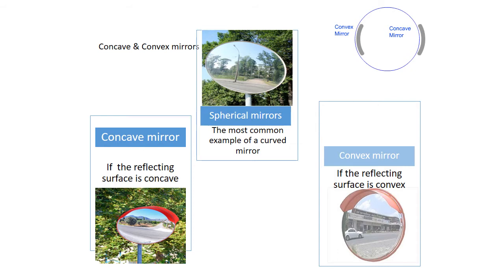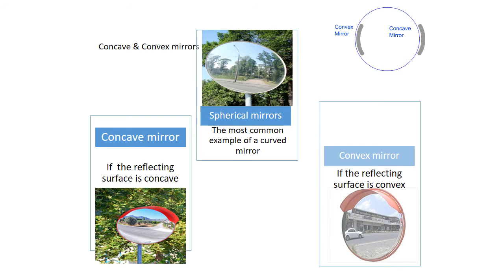When it is a concave mirror, the reflecting surface is concave. When it is a convex mirror, the reflecting surface is convex in nature. Now, before we study what are concave mirrors, it is important to study what are real images and virtual images. Images formed by mirrors that can be obtained on a screen, we call them as real images.